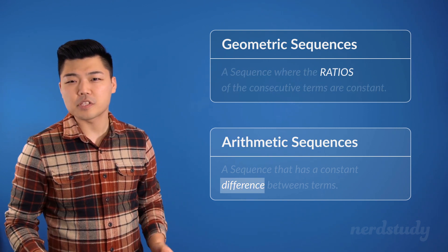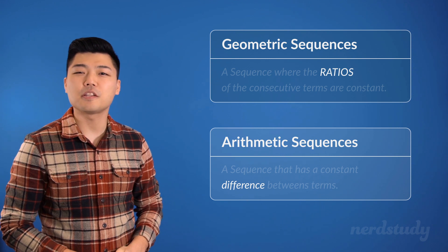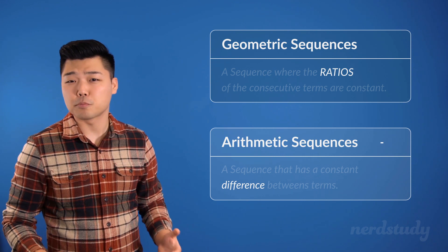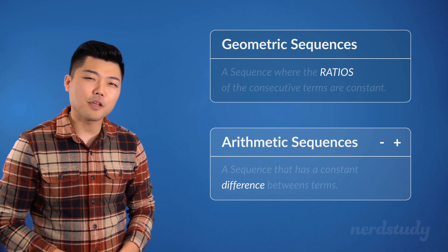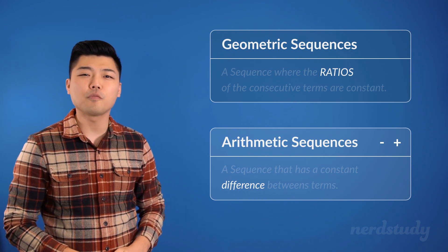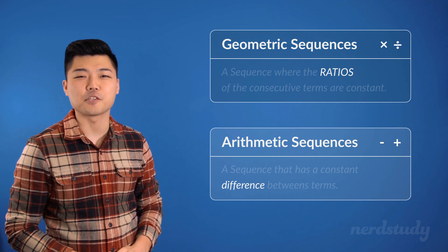The term difference here relates to a constant difference that can be either subtracted or added. Ratio, on the other hand, implies that we are looking at the involvement of multiplication or division.